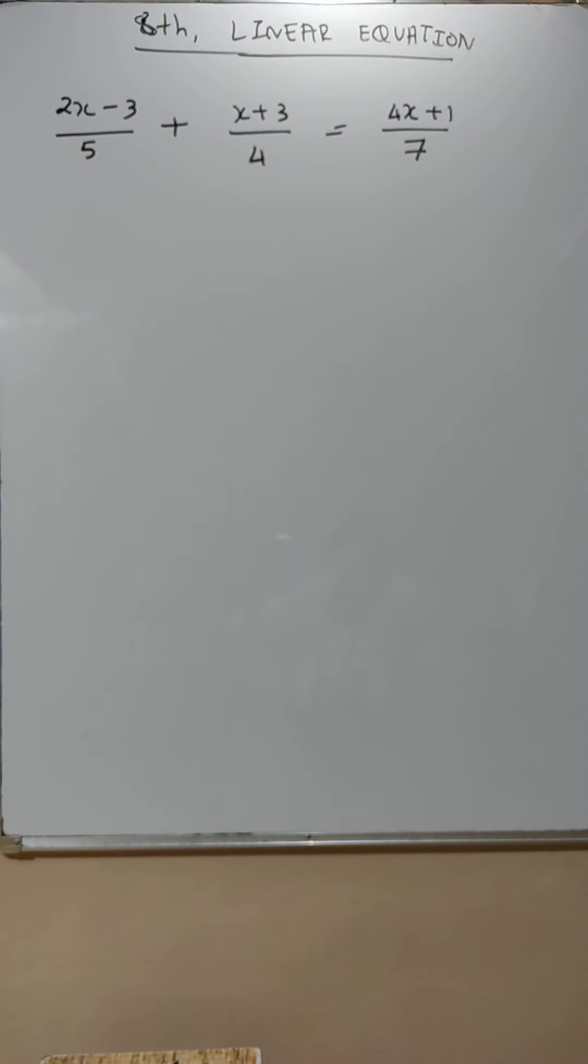You have to take, there are two ways of doing it, either you take LCM or you multiply by all. See 5, 4, 7, so if you do all this, the LCM what you get is 5, 4 or 20, 20 into 7 is 140, so you multiply everything by 140.